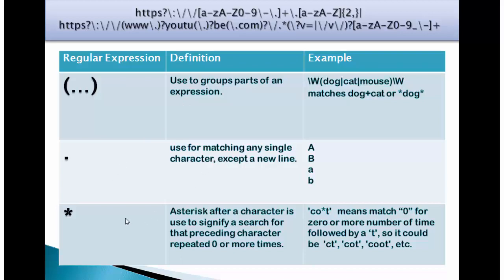And last thing out over here is this asterisk. Asterisk after a character is used to signify a search for that preceding character repeated 0 or more times. For example CO asterisk T means it matches O for 0 or more number of times followed by a T. So it could be CT which is 0 times O repeated COT or COOT so on and so forth.